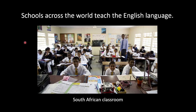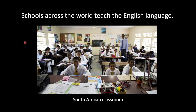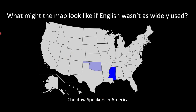Schools across the world teach English because of its high use as a lingua franca. And there's a decline in native languages — here we see native speakers in America. What might the map look like if English wasn't as widely used? We might see Oklahoma be a little darker shade of blue, Louisiana, Arkansas, Alabama might have a darker blue as well. Maybe these speakers could somehow control all of America. I can't predict the future if this never happened, but that might be what the map would look like.